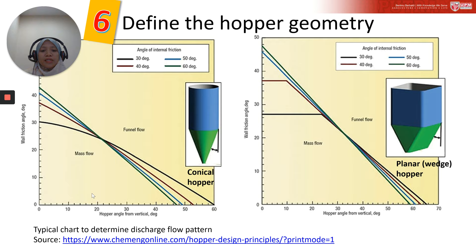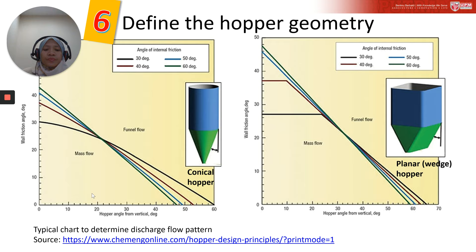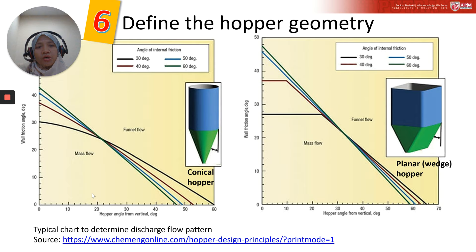Now we are looking at a graphical chart from which we can identify whether the powder we are dealing with falls under the category of mass flow or funnel flow discharge pattern. This chart was developed by Andrew Jenike, who is known as the founding father in the field of bulk solid handling. This hopper design chart shows the limits of mass flow.